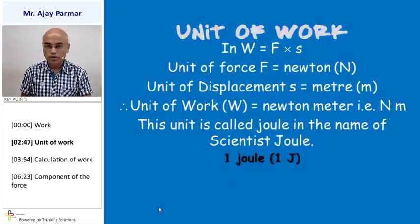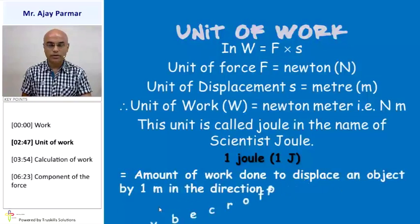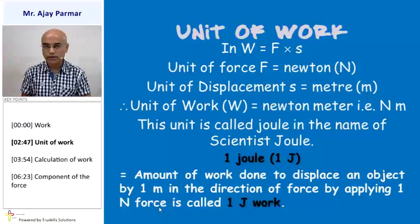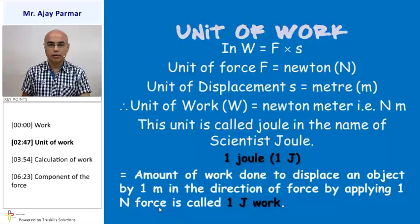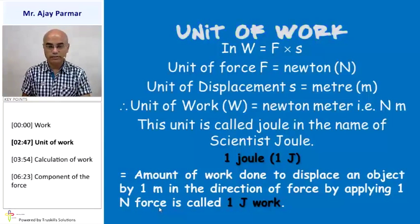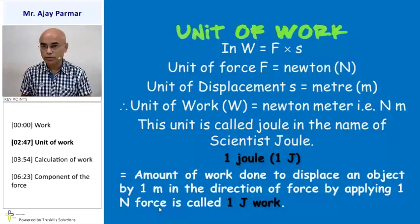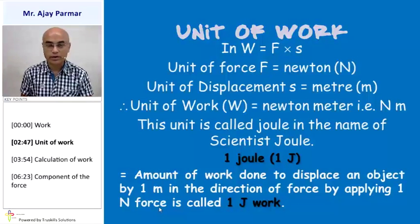What is one Joule of work? When one Newton of force is applied on any object and under the effect of that force the object displaces by one meter, then the work done on that object is considered as one Joule. So one Joule is the amount of work done to displace an object by one meter in the direction of a force of one Newton.